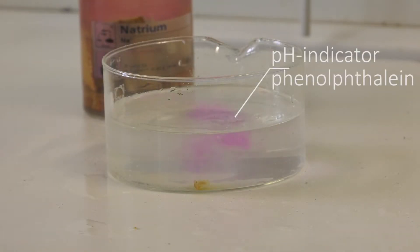After that, put a few drops of phenolphthalein into the bowl. The pH indicator will show an alkaline medium.